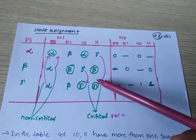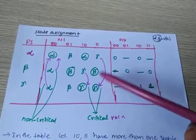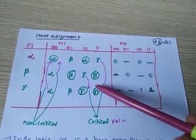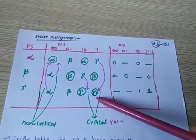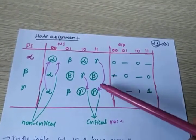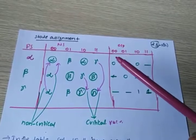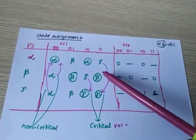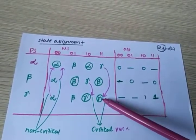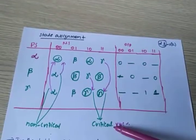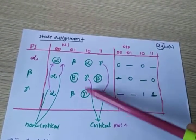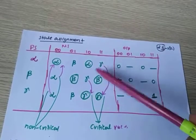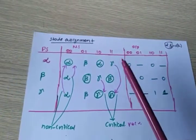What is a critical race? In a state, if more than one stable state is present, that is a critical race. Look at this table — the first stable state is beta, the second stable state is gamma. If there is a chance of transitioning to either, we have two stable states, so a critical race arises. In columns 1-0 and 1-1, alpha and gamma are the two states, so a critical race arises.